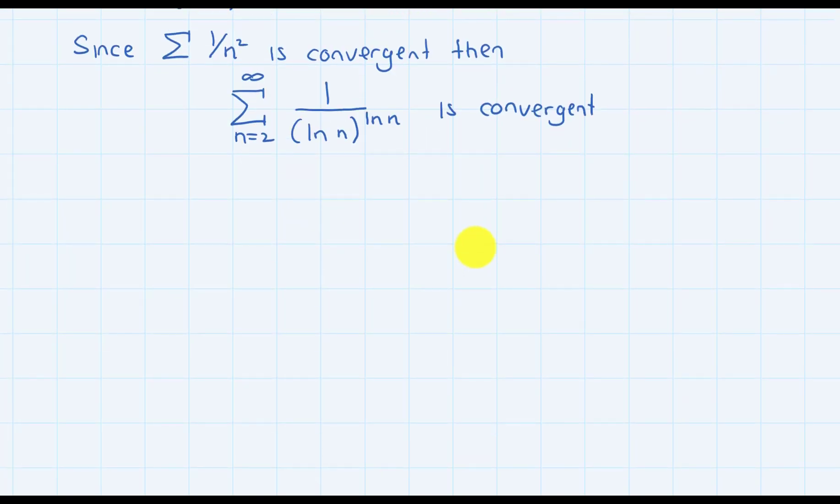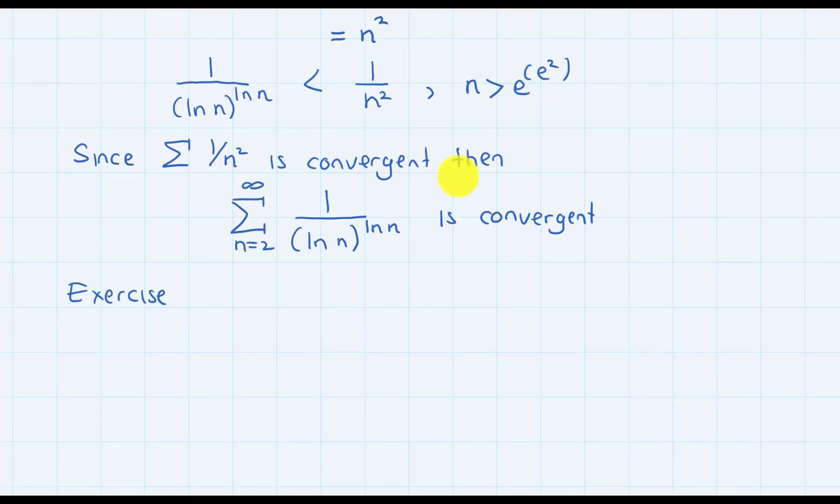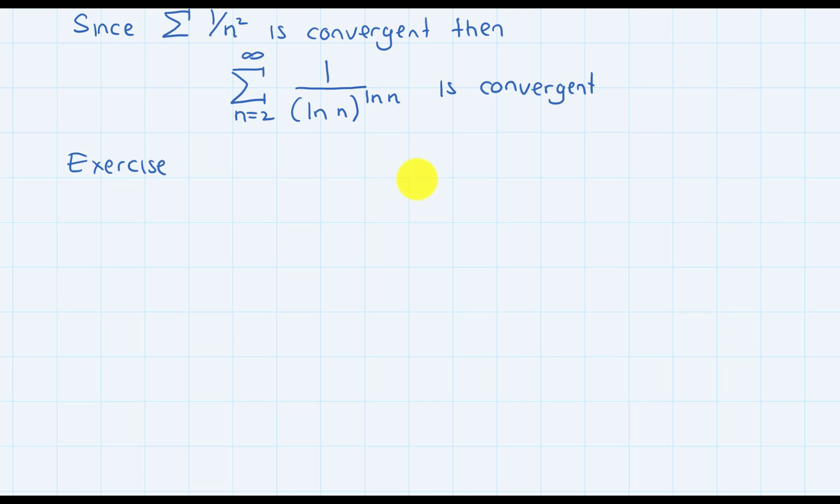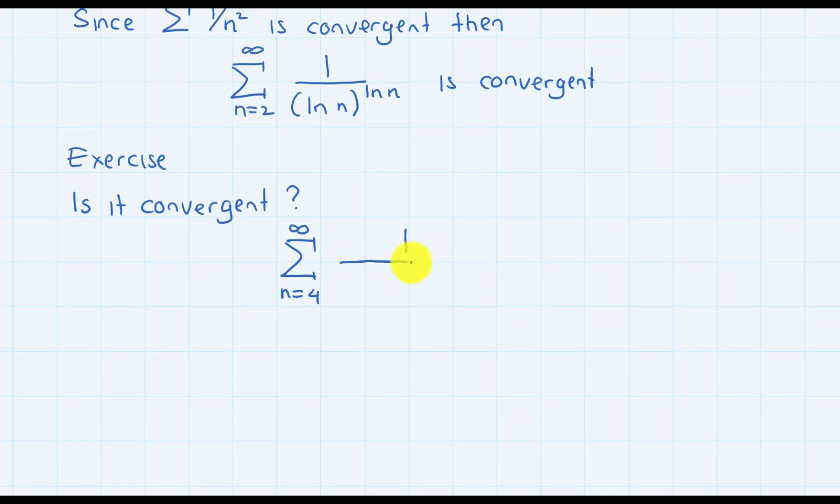Now as an exercise, and also to see if you can find out what was the motive behind what I did here starting from this statement, this exercise is similar to the one above. Again the question is the same: is it convergent or divergent? The sum from n=4 to infinity of 1 over (ln(ln n))^(ln n).